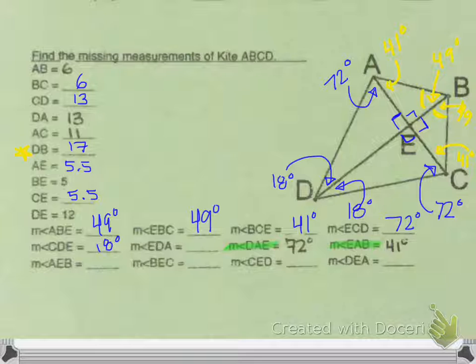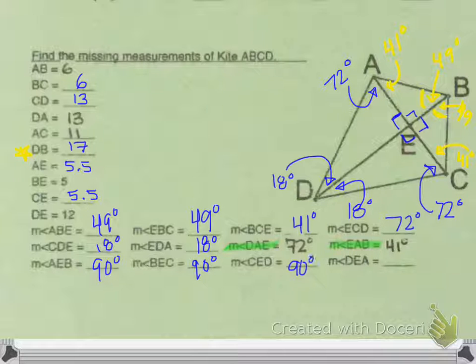EDA, that one's also 18. AEB, that's the right angle, that's 90. BEC, if you trace that one over, that's also a right angle, 90. CED, also a right angle, and DEA, also a right angle. All right.